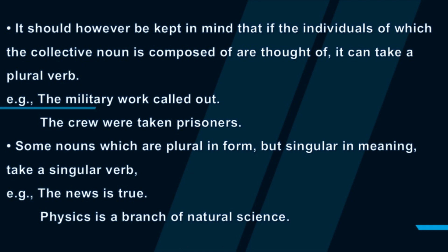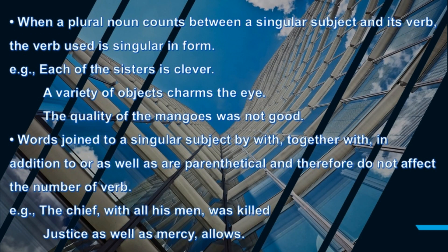Some nouns which are plural in form but singular in meaning take a singular verb. Example: The news is true. Physics is a branch of natural science. When a plural noun comes between a singular subject and its verb, the verb used is singular in form. Example: Each of the sisters is clever. A variety of objects charms the eye. The quality of the mangoes was not good.